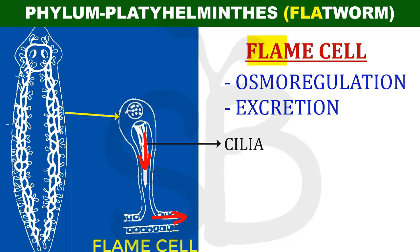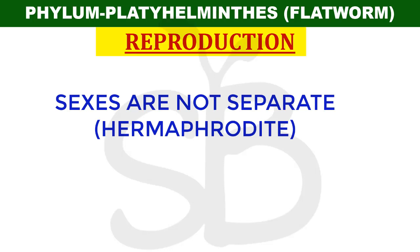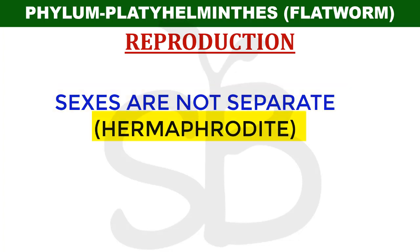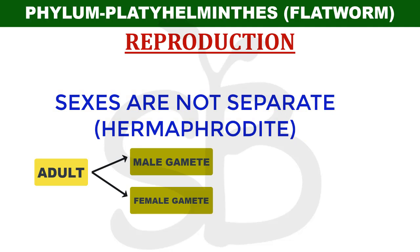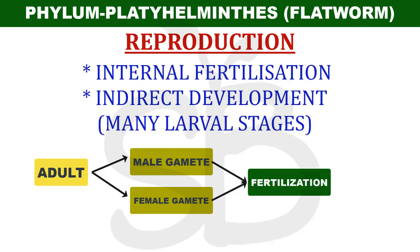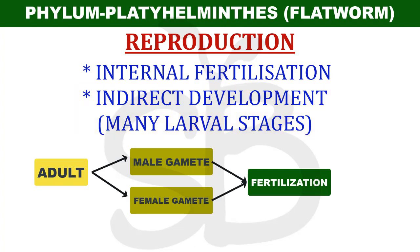Next is reproduction. They are all bisexual organisms - sexes are not separate. They are hermaphrodites; male and female gametes are produced by the same organism. Fertilization is internal. Indirect development - that means there is a larval stage. There are multiple larvae in platyhelminthes.